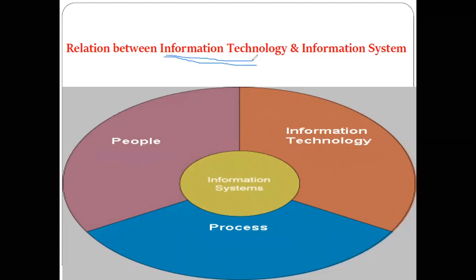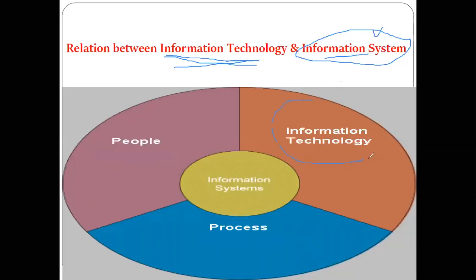Information technology is nothing but the systems — computers — which are utilized for the purpose of storing information, processing information, retrieving information, gathering or collecting information, etc. Information technology is related with only devices and systems like computer hardware and computer software, and the processing of data using that computer hardware and software.